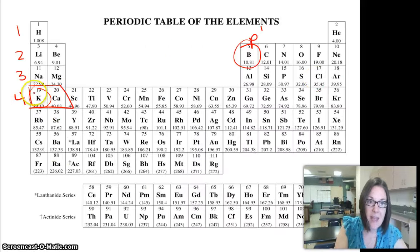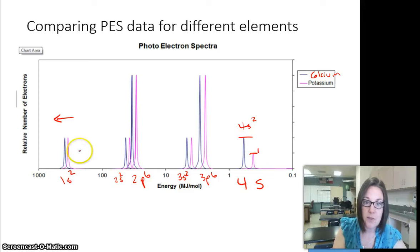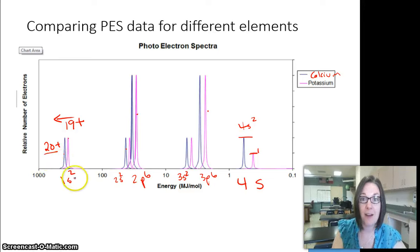...has 19 protons and calcium has 20. So there's only 19 positive charges pulling on all the purple electrons, but there are 20 positive charges pulling on all the blue ones. So it's going to take even more energy to remove calcium's electrons, since it's got 20 protons pulling in on those. We call that effective nuclear charge.